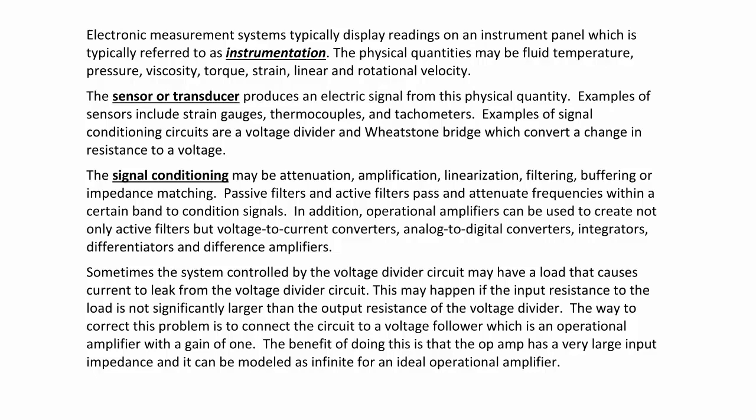Sometimes the system controlled by the voltage divider circuit may have a load that causes current to leak from the voltage divider circuit. This may happen if the input resistance to the load is not significantly larger than the output resistance of the voltage divider. The way to correct this problem is to connect the circuit to a voltage follower or buffer, which is an operational amplifier with a gain of one. The benefit is that the op amp has a very large input impedance, modeled as infinite for an ideal op amp.